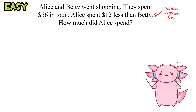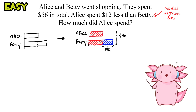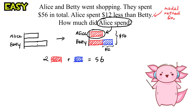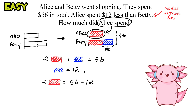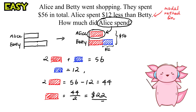So if the total worth is $44 and there are two red bars, we can divide that by two to get the value of one red bar, which is $22.